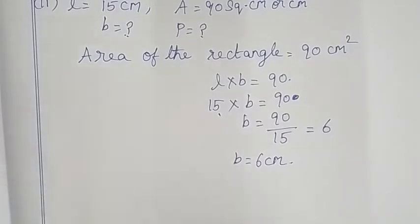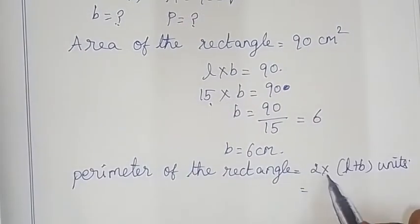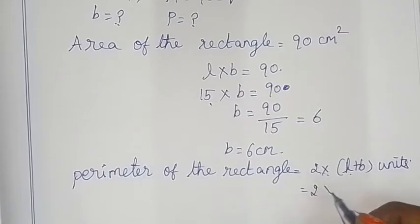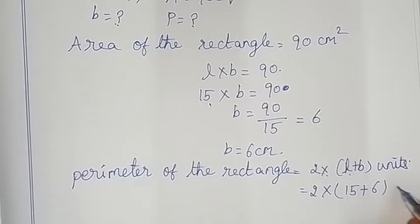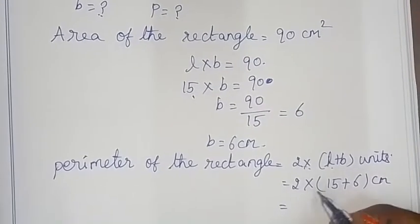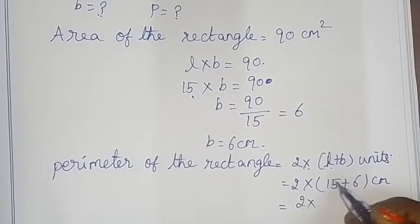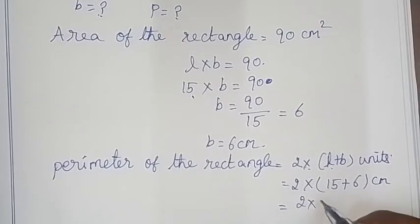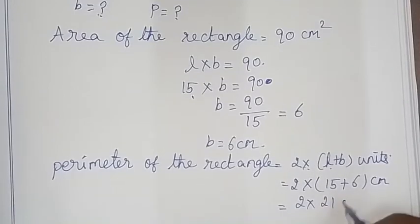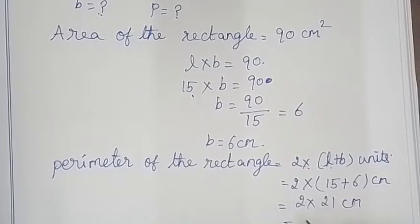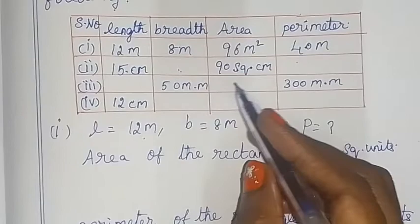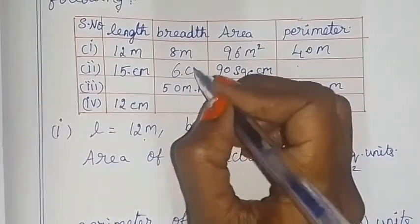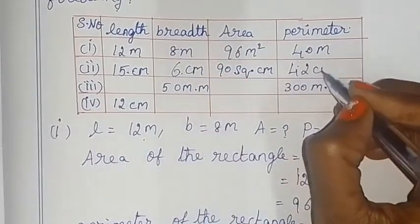Now perimeter of the rectangle = 2 into (L + B) = 2 into (15 + 6). So 15 + 6 = 21, and 2 × 21 = 42 cm. So the breadth is 6 cm and the perimeter is 42 cm.